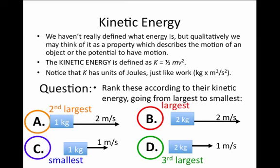The smallest kinetic energy is answer C, because both the mass and the speed are 1, and therefore the overall kinetic energy is half a joule.